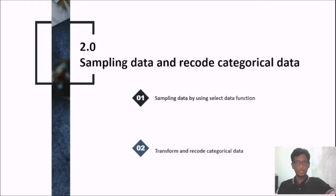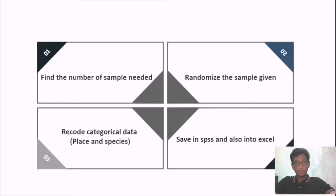For sampling data and recoding categorical data, we will cover sampling data by using the select cases function and transform and recode categorical data. The method used involved finding the number of samples needed — in case set B, which is 60 — then randomizing the sample. By using the method in the question, we randomized all the samples until we obtained 60. We also needed to recode the categorical data, which was placed as species, to be able to proceed to the next step. Lastly, we saved the data in SPSS and also in Excel format.